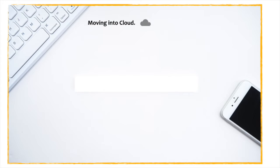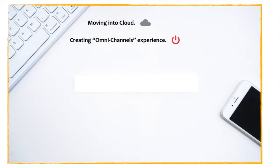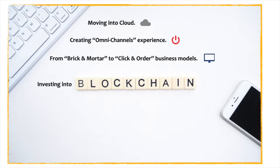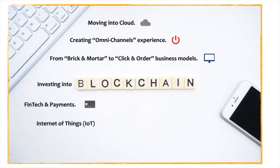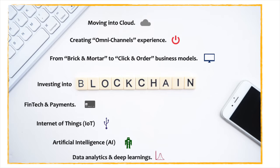There are many ways we can do transformation projects: we can move to the cloud, create an omnichannel experience, move to an e-commerce model, invest in blockchain, do fintech and payments to transform transaction processing, embrace the Internet of Things, apply artificial intelligence, and dive deep into data analytics and deep learning.